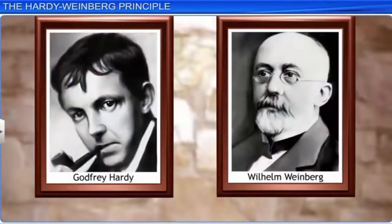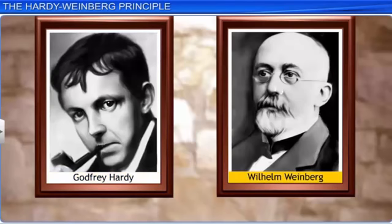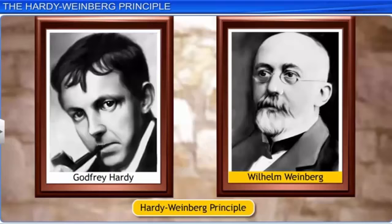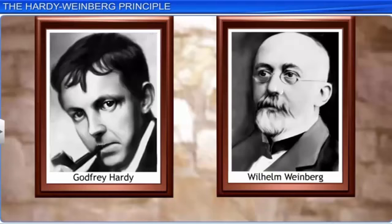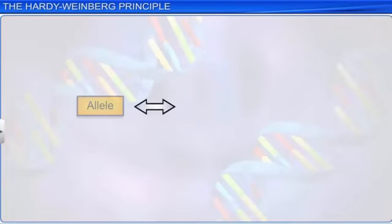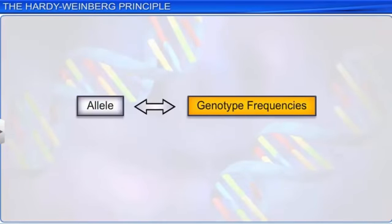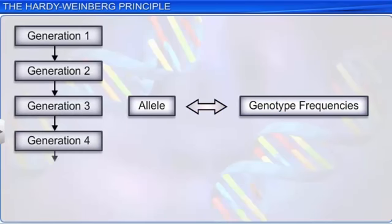In the 20th century, an English mathematician Godfrey Hardy and a German physician Wilhelm Weinberg founded the Hardy-Weinberg principle, also known as Hardy-Weinberg equilibrium. Using mathematical modeling based on probability, they stated that allele and genotype frequencies in a population remain in genetic equilibrium from generation to generation, unless specific disturbing influences are introduced.